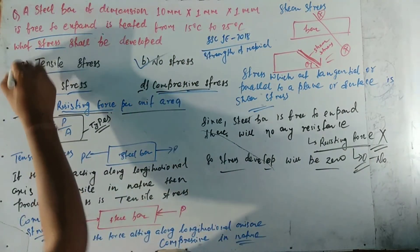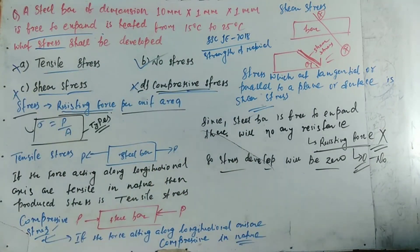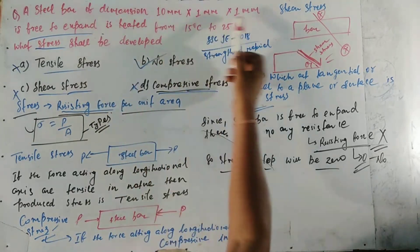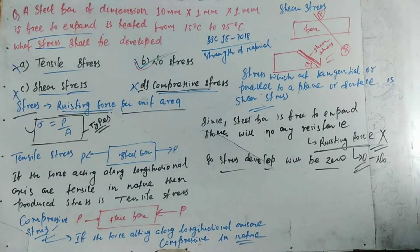So the correct answer will be option B — no stress. Options A, C, and D are wrong. A steel bar of dimension 10 mm x 1 mm x 1 mm is free to expand and is heated from 15 degrees Celsius to 25 degrees Celsius, so no stress shall be developed. The correct answer is option B. Today's question is over. Thanks for watching.